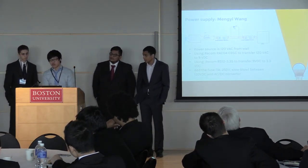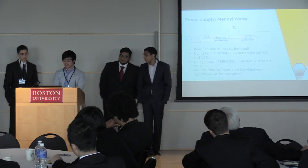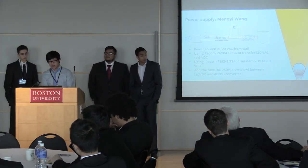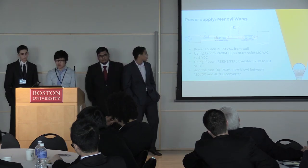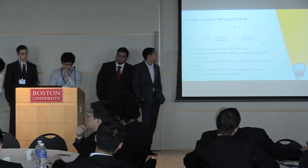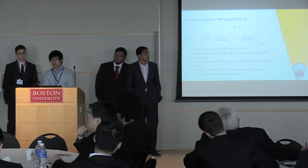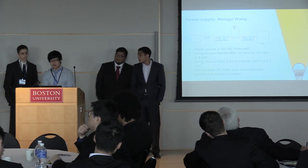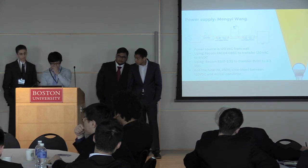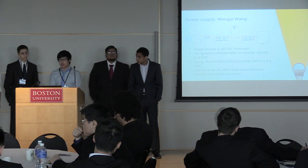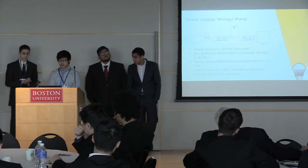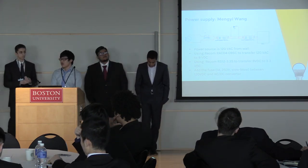I'm Emmanuel, and I was responsible for the power supply. Our power source is 120-volt AC from the wall. We use an AC-DC converter to step it down from 120-volt AC to 9-volt DC, which powers the LED. We then step down from 9-volt DC to 3.3-volt DC for the Edison. For safety, we added a fuse between the 120-volt AC and the AC-DC converter.